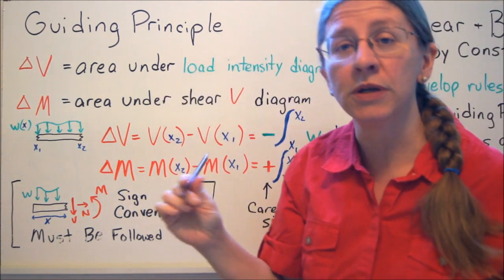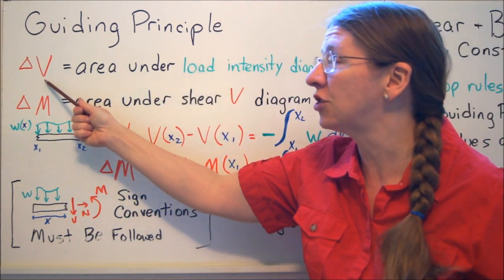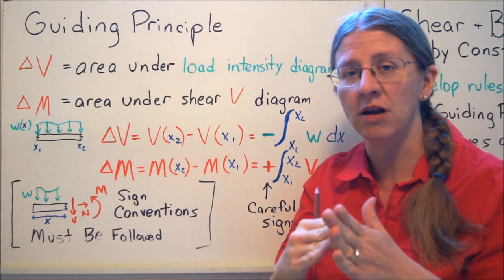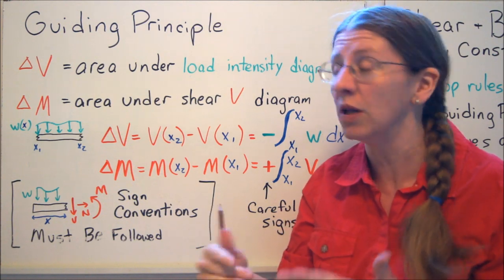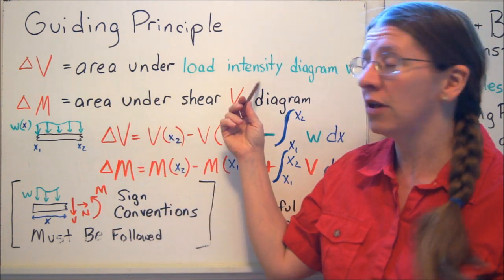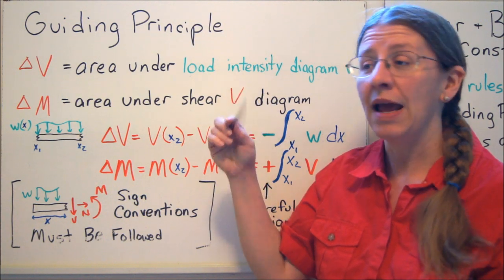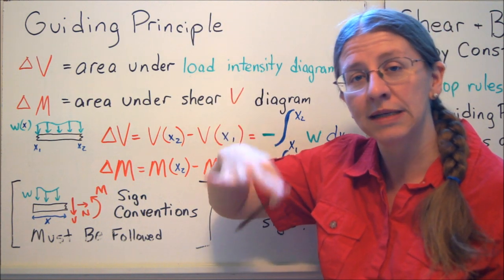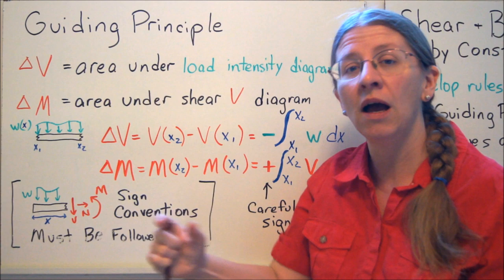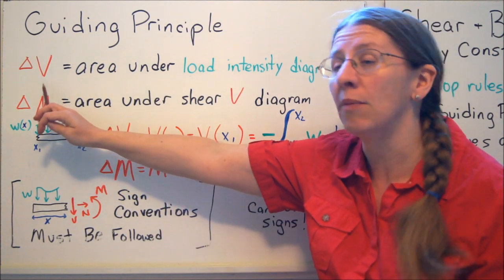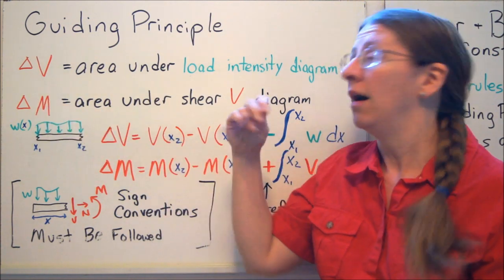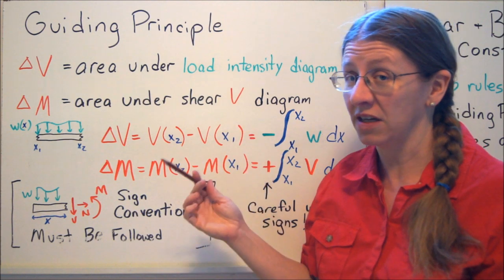So our guiding principle here is that the change in the shear diagram, remember we're going to start at zero and then we're going to see how it changes as we go along, is the area under the load intensity diagram. So if I have some distributed load pressing down on my beam, the area under that diagram is going to tell me how much V changes. If there isn't any, then V is not going to change, it will be constant.